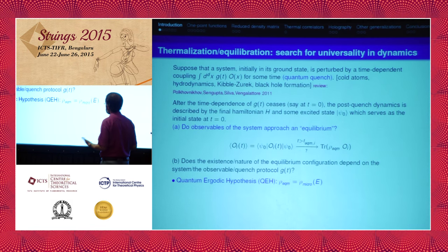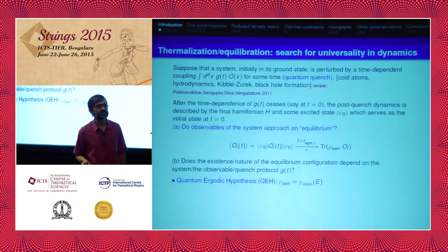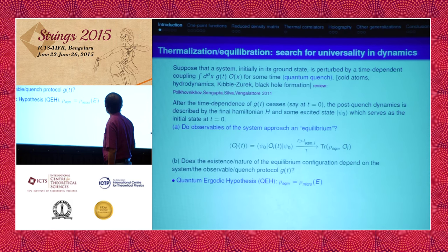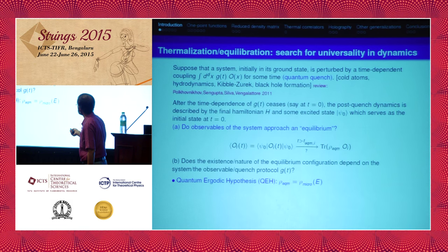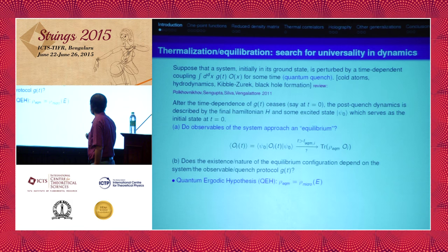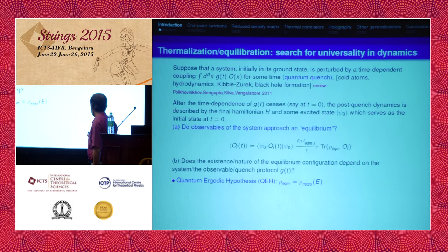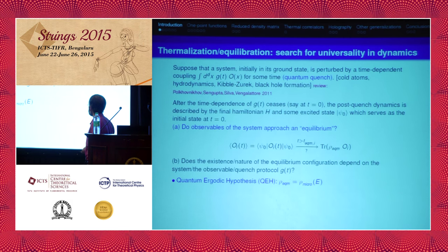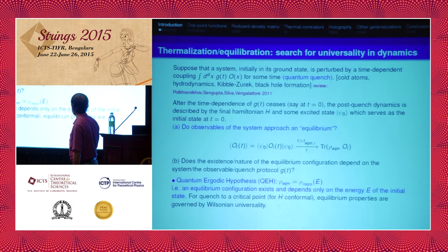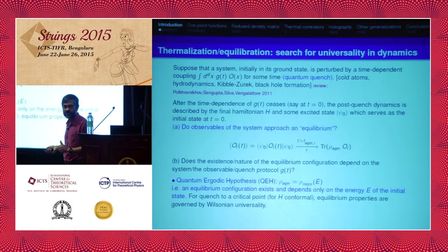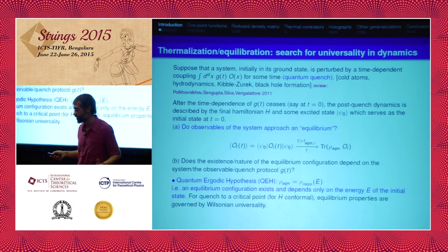There is a sort of hypothesis in this field called the quantum ergodic hypothesis, which says that under certain circumstances, such equilibrium ensembles would exist and would know about the energy of this state. It's a conservative system — once the time dependence has ceased, it's governed by a conservative Hamiltonian. You compute the expectation value of the Hamiltonian in this state, construct a microcanonical ensemble using that energy, and the hypothesis simply is that rho_equilibrium is the microcanonical ensemble based on that energy. So the equilibrium configuration depends only on the energy of the initial state.